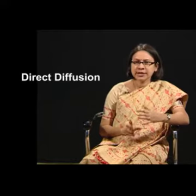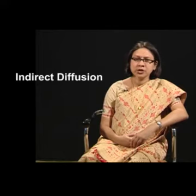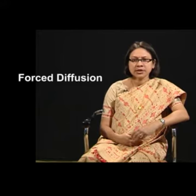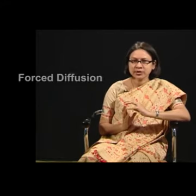What are the different types of Diffusion? Diffusion may be direct, indirect, or forced. Diffusion is direct when two cultures trade, intermarry, or wage war on one another. Indirect Diffusion occurs through the agency of third parties. Diffusion is forced when one culture subjugates another and imposes its customs on the dominated group.